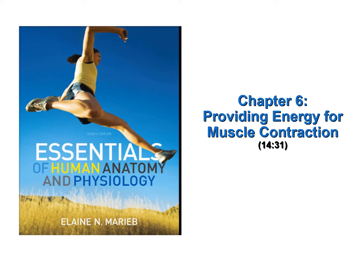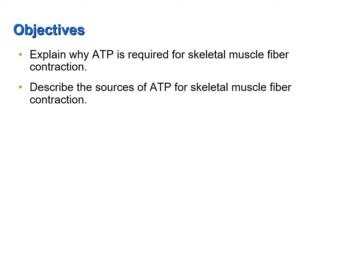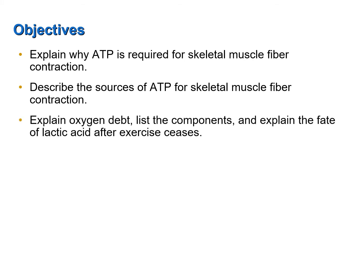Providing energy for muscle contraction is the topic of this screencast, which may be found in Chapter 6 of your textbook. This screencast was designed to help you achieve the following objectives: explain why ATP is required for skeletal muscle fiber contraction; describe the sources of ATP for skeletal muscle fiber contraction; explain oxygen debt, list the components, and explain the fate of lactic acid after exercise ceases; and explain muscle fatigue.